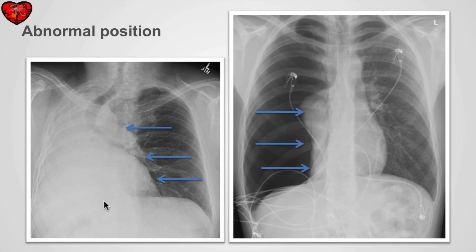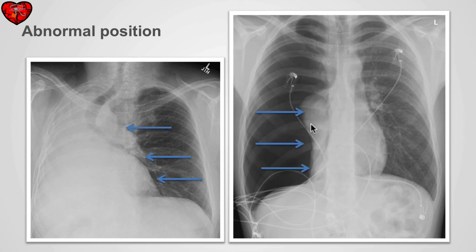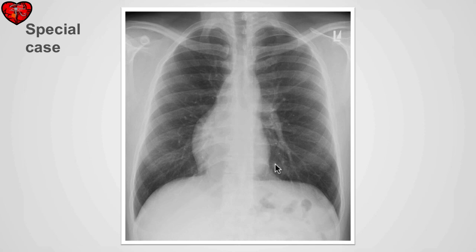In these cases, we have abnormal position of the heart. In one case, the abnormal position is caused by a previous pneumonectomy and displacement of mediastinal structures to the side of the surgery. In another case, a tension pneumothorax with collapse of the entire right lung causes a shift of the mediastinal structures including the heart to the left. We also see a case of complete reversal of the cardiac shadow, called dextrocardia.